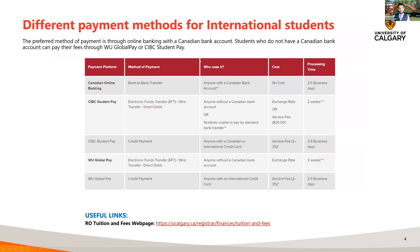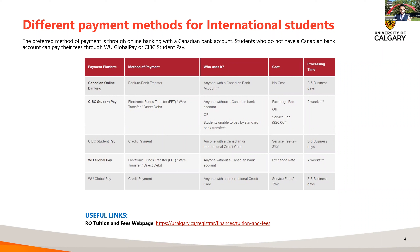The different payment methods available for international students include Canadian online banking transfers. If you're already here in Canada and have opened a bank account, you can pay tuition directly from your Canadian bank account. This is the fastest method — once you initiate the transfer from your bank to your university account, it only takes about three to five business days. That's the standard processing time.